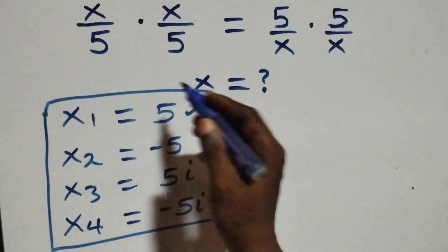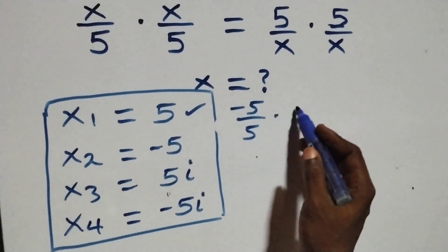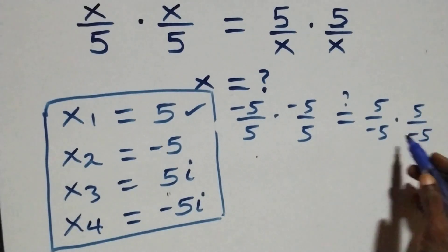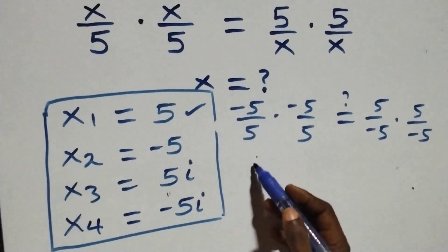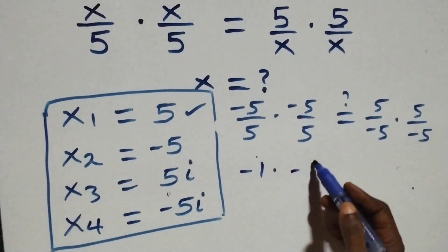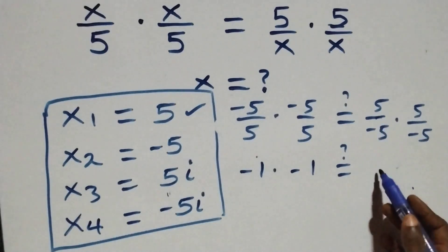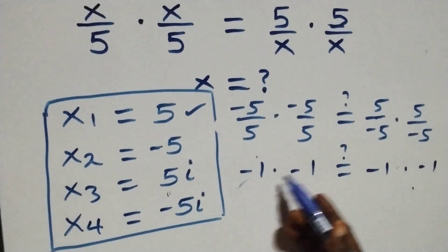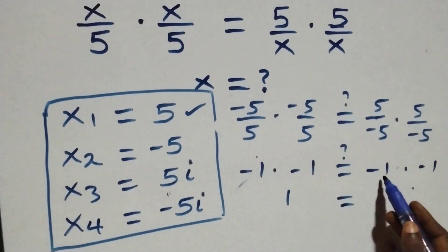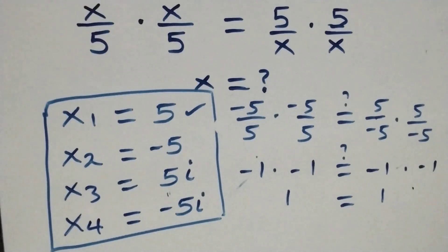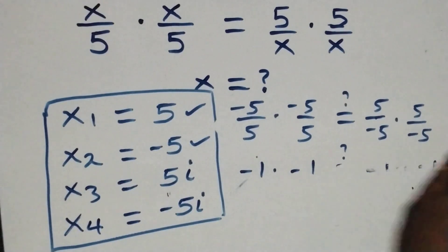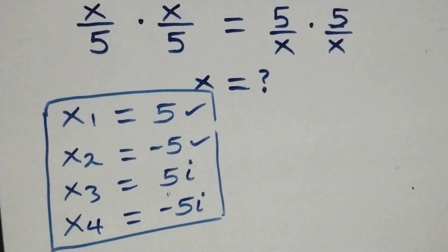Now we substitute x equals minus 5. The equation becomes minus 5 over 5 times minus 5 over 5, which is minus 1 times minus 1, giving plus 1. On the right-hand side: 5 over minus 5 times 5 over minus 5 is also minus 1 times minus 1, giving plus 1. Hence left-hand side equals right-hand side, and x equals minus 5 also satisfies this equation.